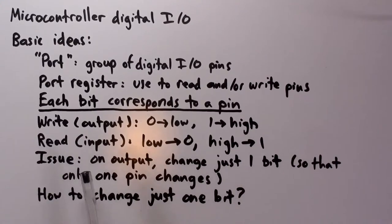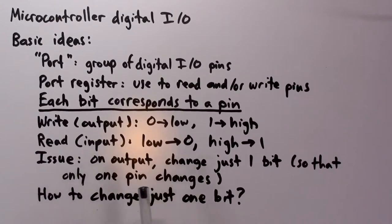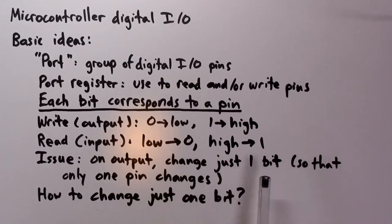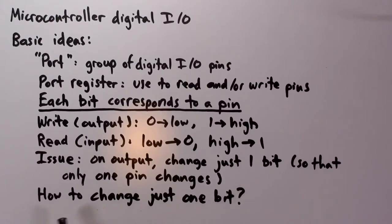There is one issue that arises when you use a port register to write data to the pins: in general, we want to be able to change just one pin, meaning we want to change just one bit in the register. So how exactly do you do that?